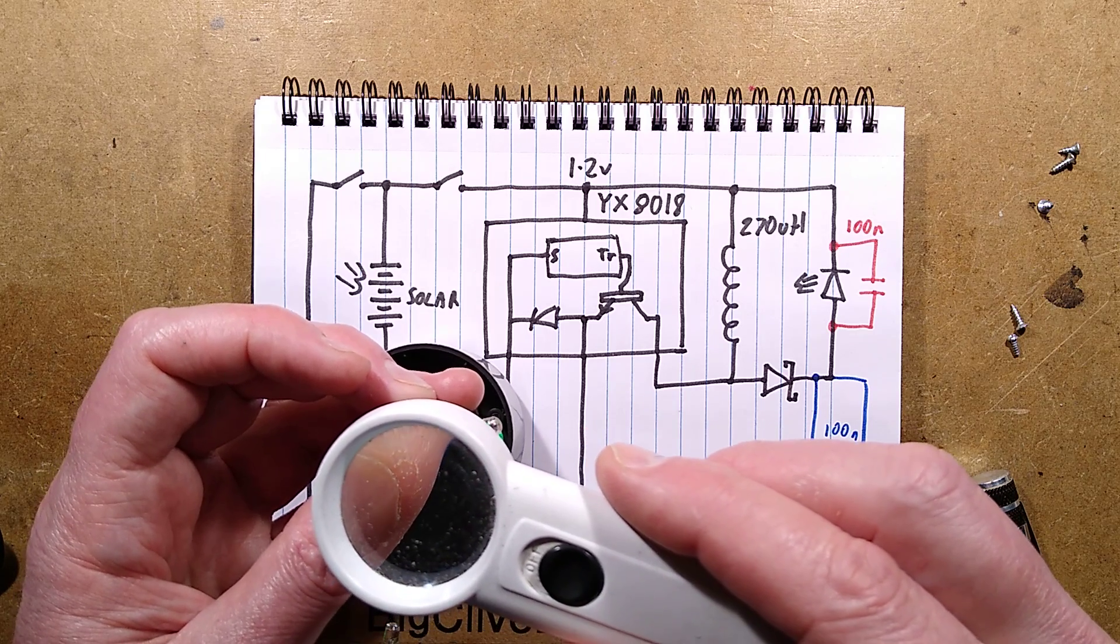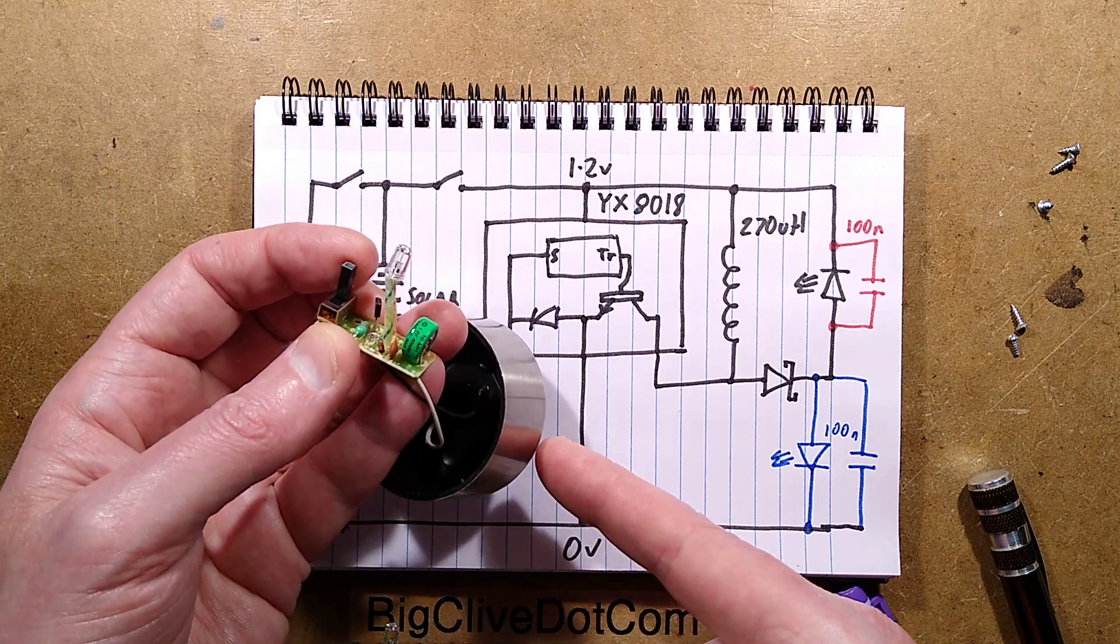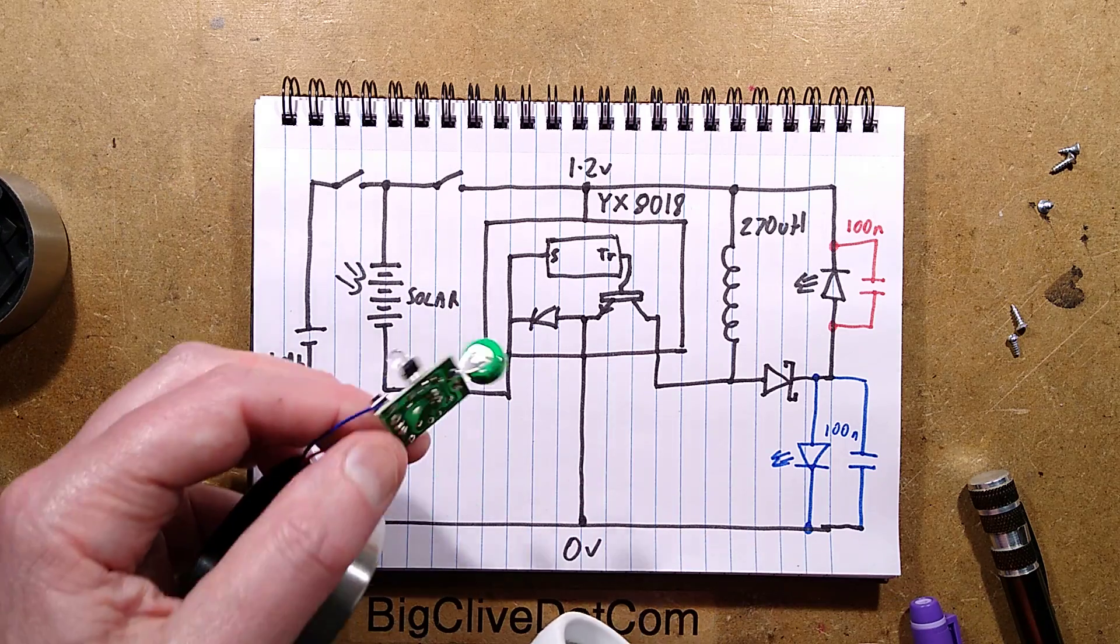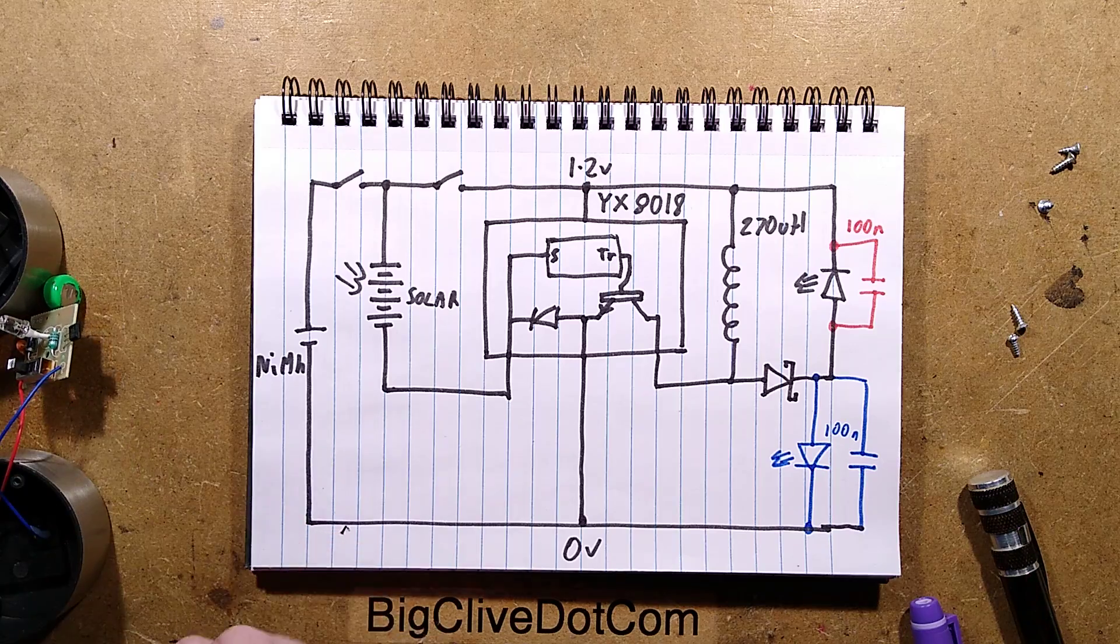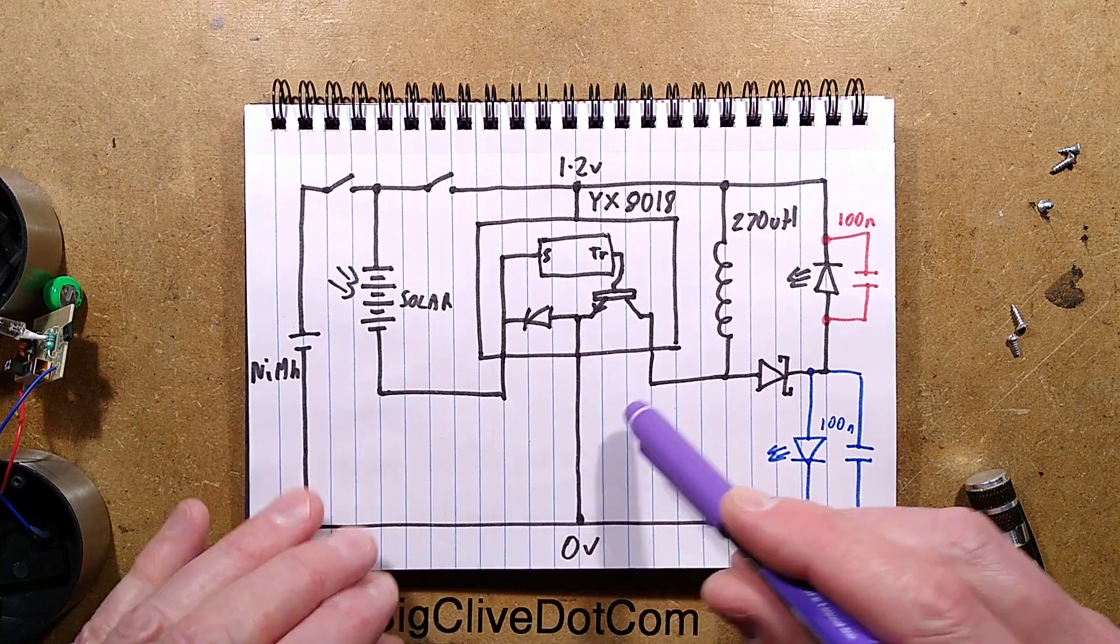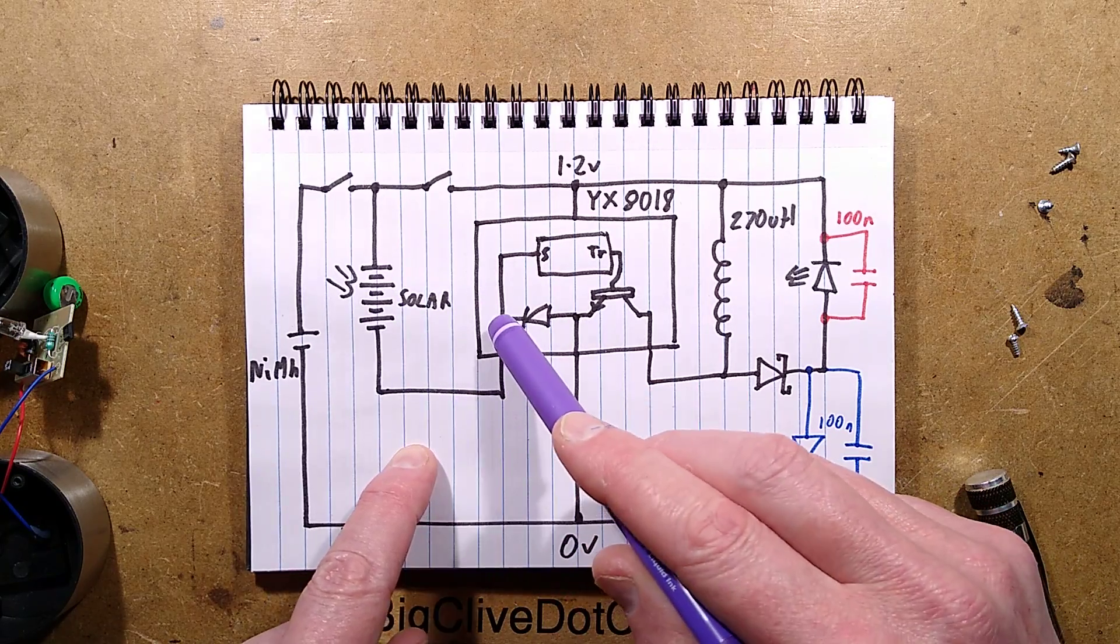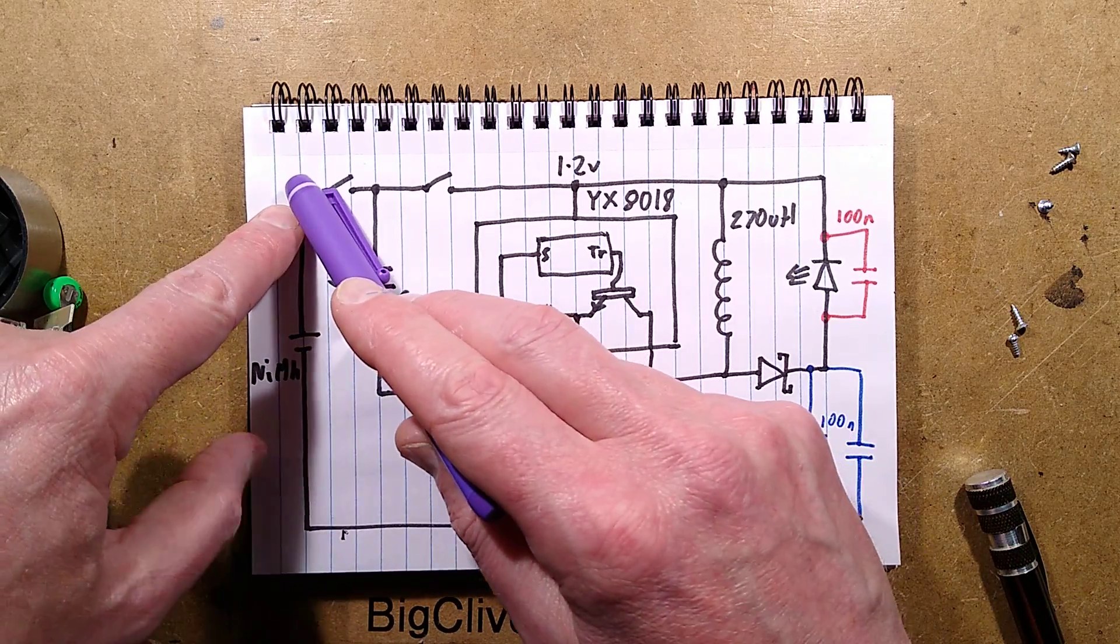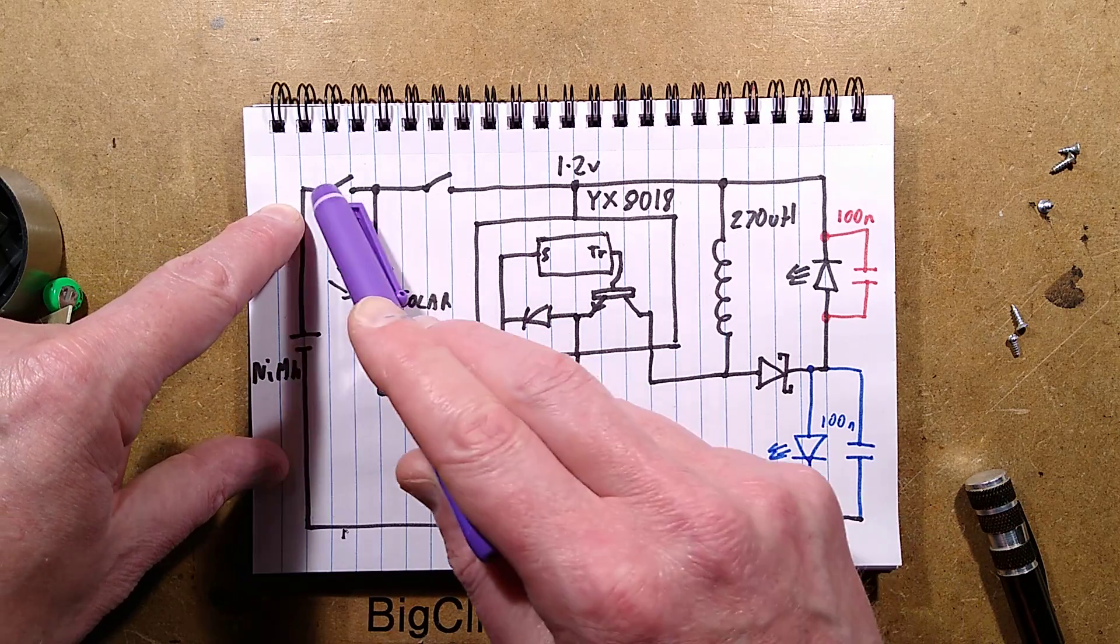It also has what looks like a different value of inductor, 220 microhenry, which means this one's going to be a bit brighter but the battery life is going to be shorter. Once again, this one's a winner. However, they've both got a design flaw.